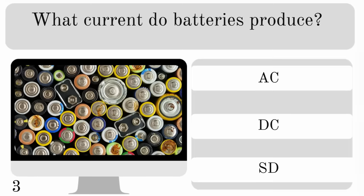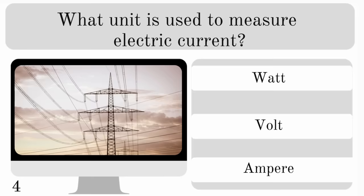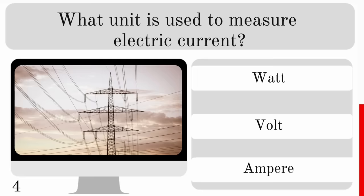What current do batteries produce — AC, DC or SD? There's no such current as SD; they are DC, direct current. So what unit is used to measure electric current? Is it the watt, volt or ampere? The correct answer is the ampere.